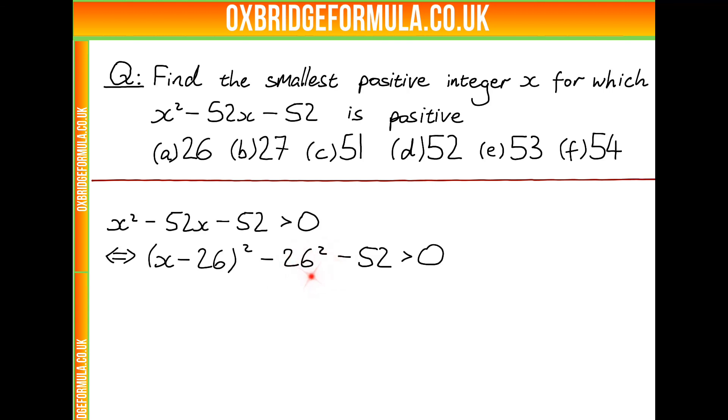So we can rewrite this if we move 26 squared and 52 onto the other side. And now what can we notice? Well, 52 is just 2 times 26. So on the right hand side we have 26 times 26 plus 26 times 2. So we can factor the 26 out and we just have 26 times by 26 plus 2.